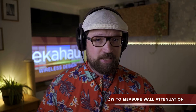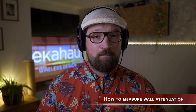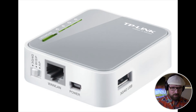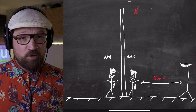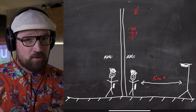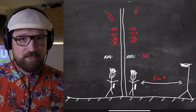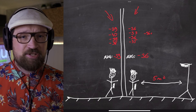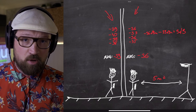Now we understand why we need to measure wall attenuation. Let's talk about how to do it. You do need to have Ekahau Sidekick connected to a server device of your choice and a Wi-Fi radio — whether it be an AP on a stick, portable router, or your mobile hotspot. You need to position your Wi-Fi radio at least 5 meters away from the wall. Then you measure the RSSI on one side of the wall, then go to the other side and also measure the RSSI. You look at the change of these two values and calculate the attenuation of your wall.